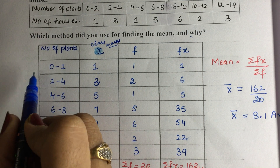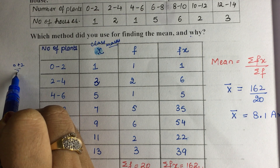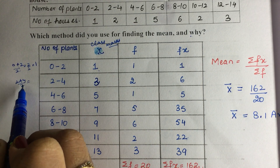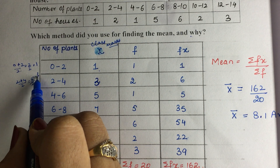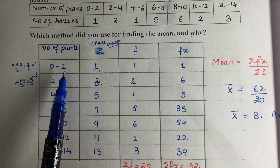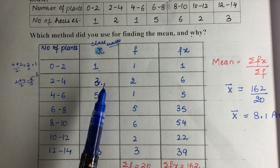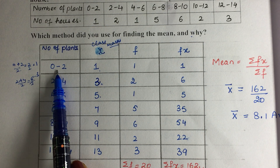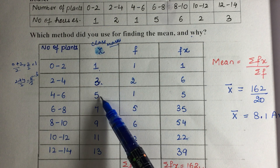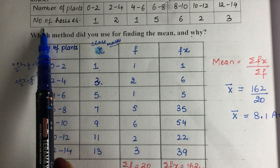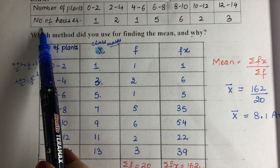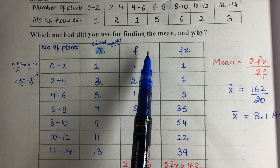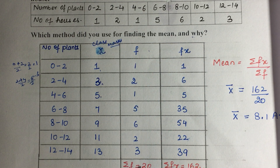For example, first interval is 0 to 2: zero plus two over two equals one. Next, two plus four over two equals three. Next is five. The gap between class marks is two throughout, so the series is 1, 3, 5, 7, 9, 11, 13. The frequency column (number of houses, children, or plants — whatever is given) is your f, i.e., frequency. Note it down.